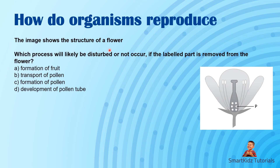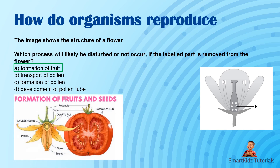The image shows the structure of a flower — which process will likely be disturbed if the labelled part is removed? It is referring to the ovary, which is responsible for the formation of fruit. So if the ovary is removed, formation of fruit will not take place.